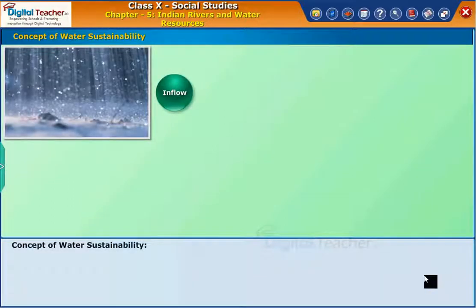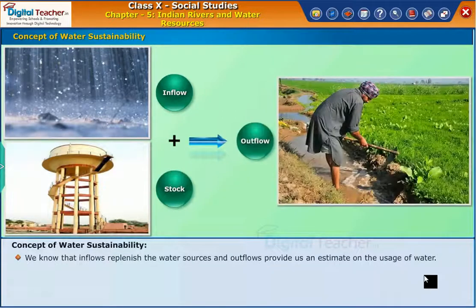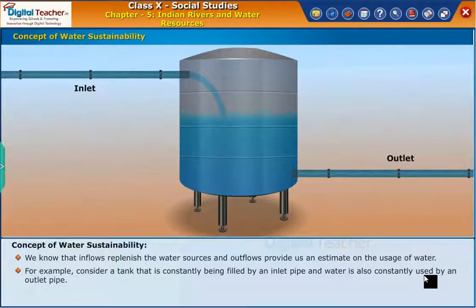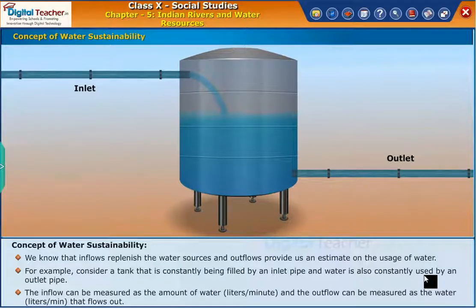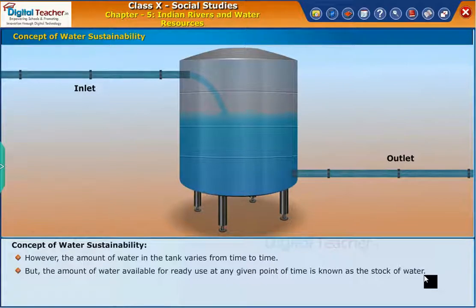Now, let us look at the concept of water sustainability. We know that inflows replenish the water sources and outflows provide us an estimate on the uses of water. For example, consider a tank that is constantly being filled by an inlet pipe and water is also constantly used by an outlet pipe. The inflow can be measured as the amount of water in liters per minute and the outflow can be measured as the water liters per minute that flows out. However, the amount of water in the tank varies from time to time, but the amount of water available for ready use at any given point of time is known as the stock of water.